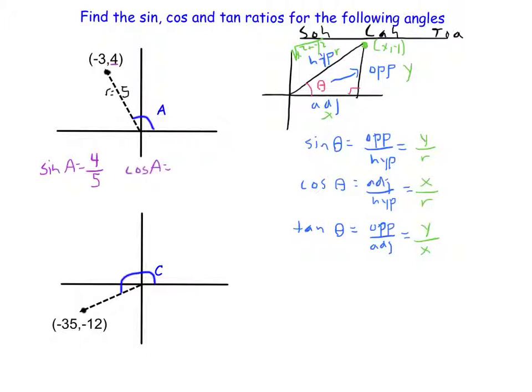CAH, adjacent over hypotenuse. Adjacent is this X one, and notice that my X one in this is negative, so it's going to be negative 3 over the hypotenuse, that diagonal distance, 5.